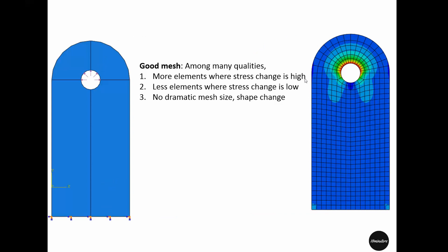A good mesh should have many qualities, but among them some important ones are: a good mesh is one that has more elements where the stress change is high. For example, from here to here the stress changes quite fast, so a good mesh will have more elements here.